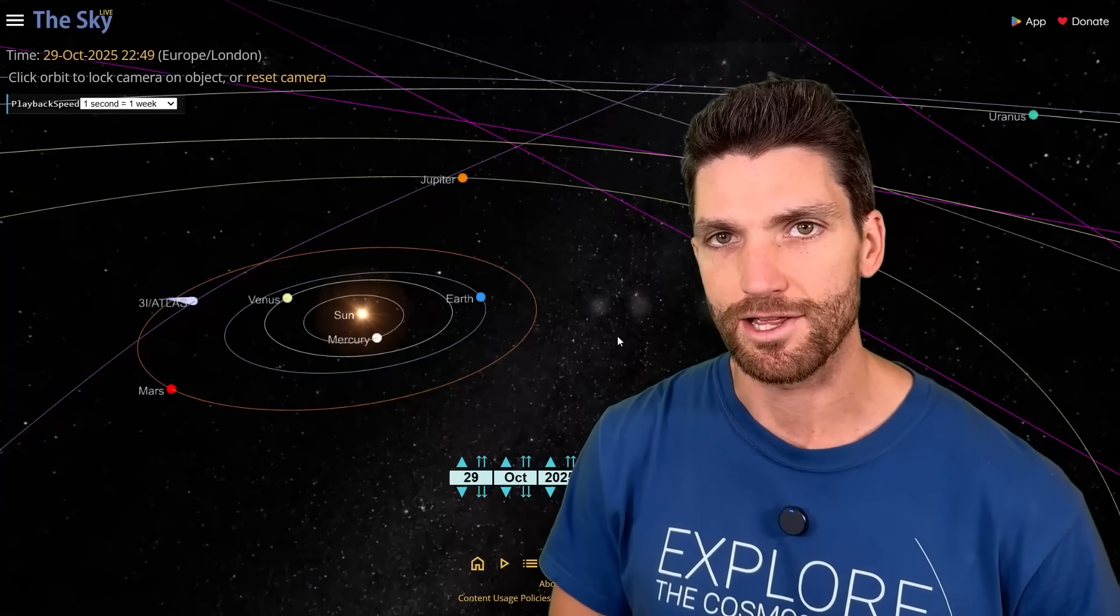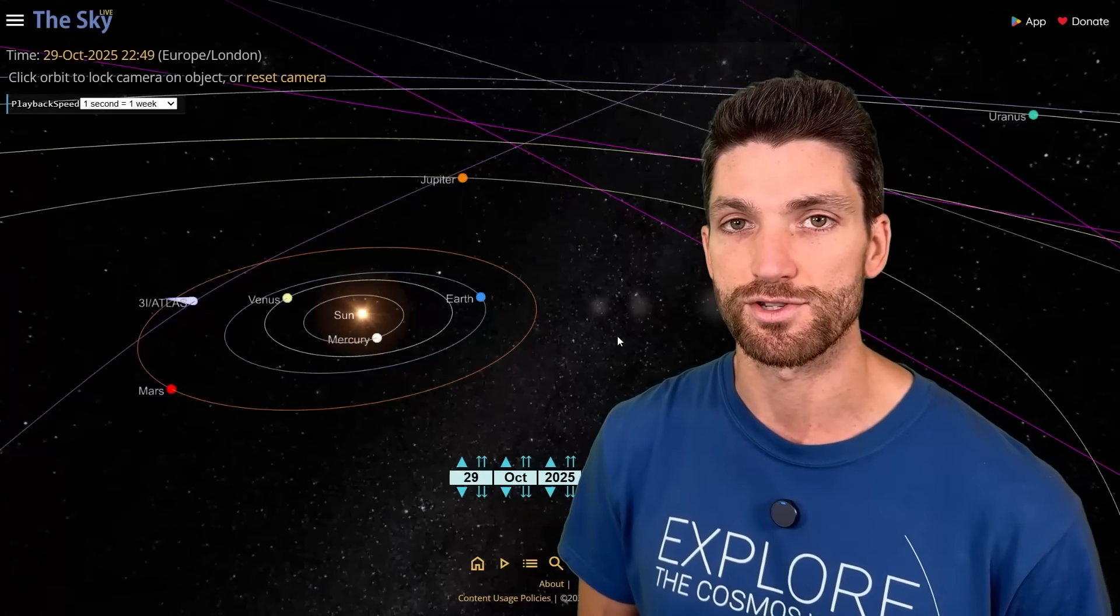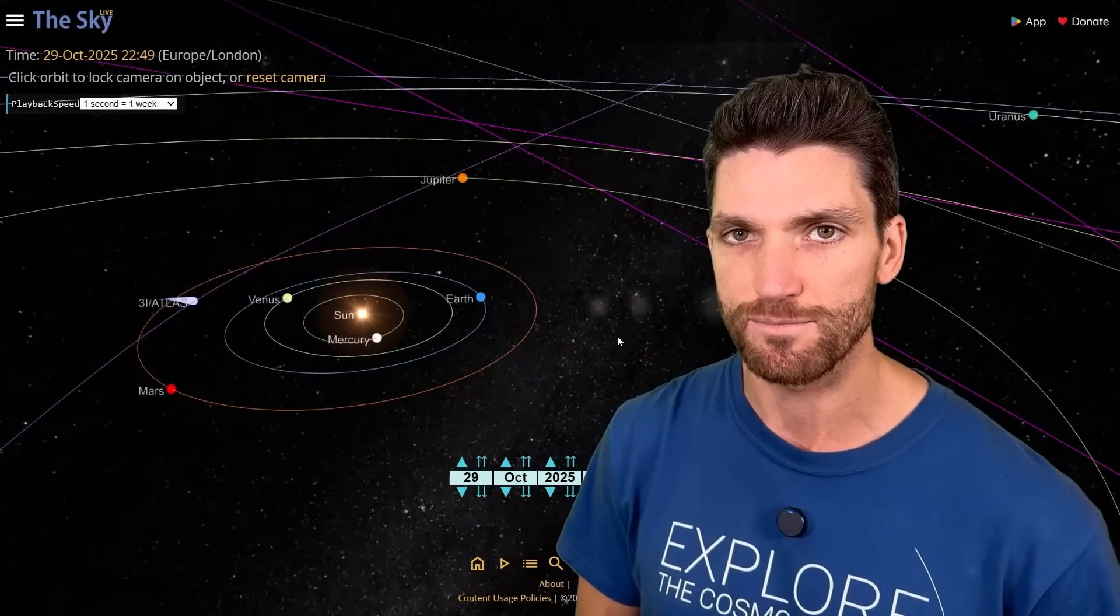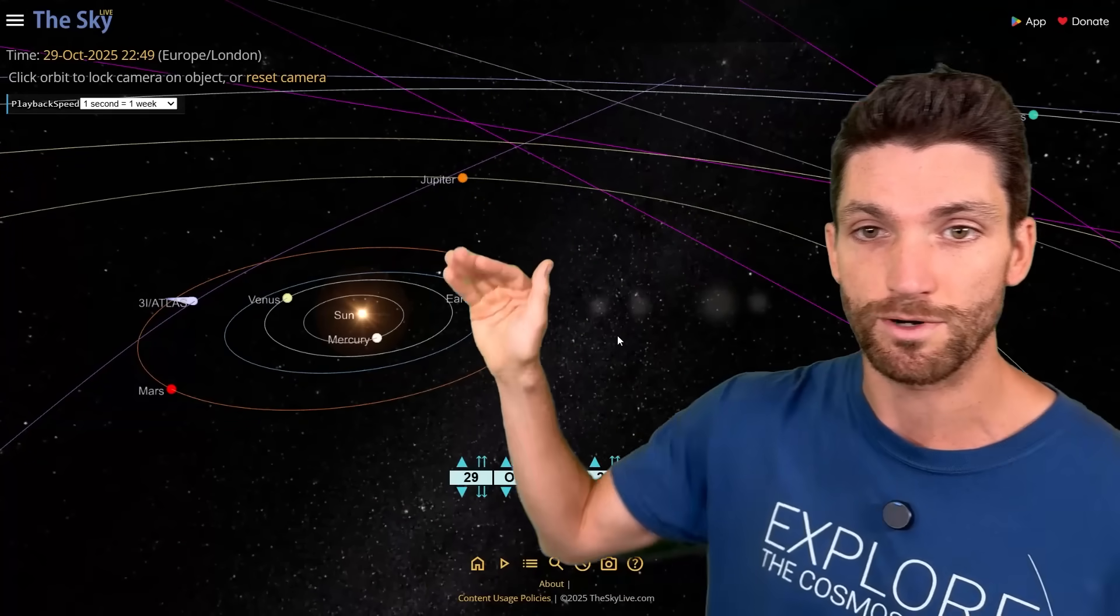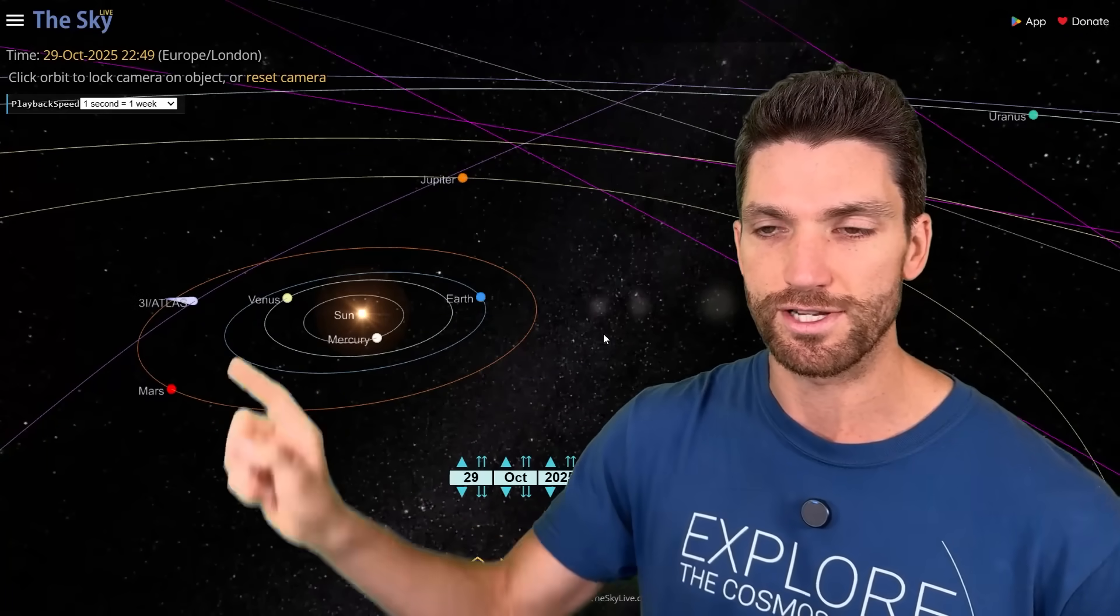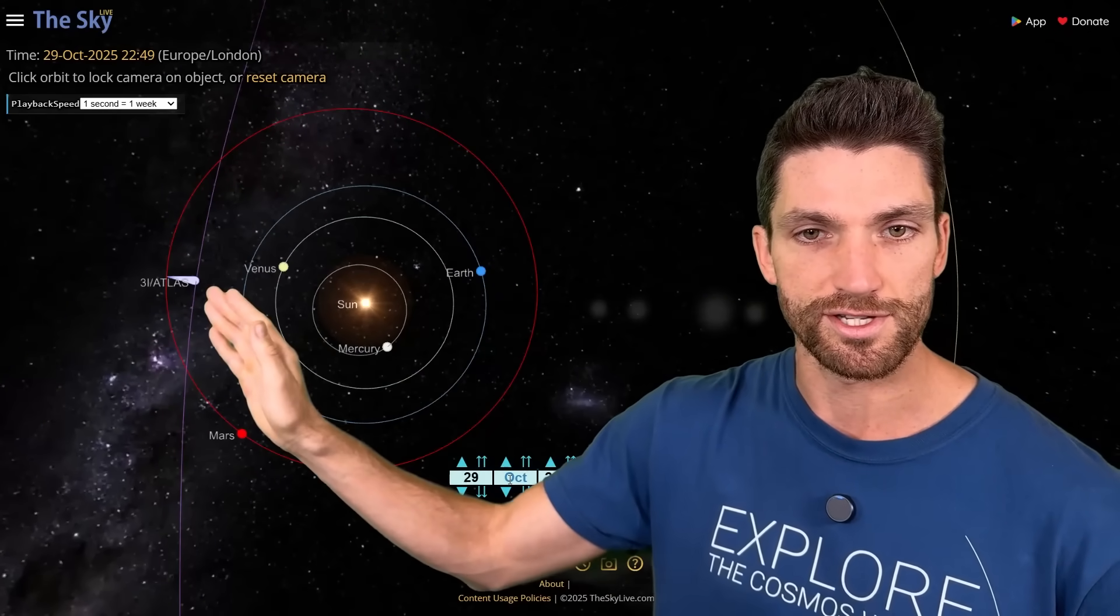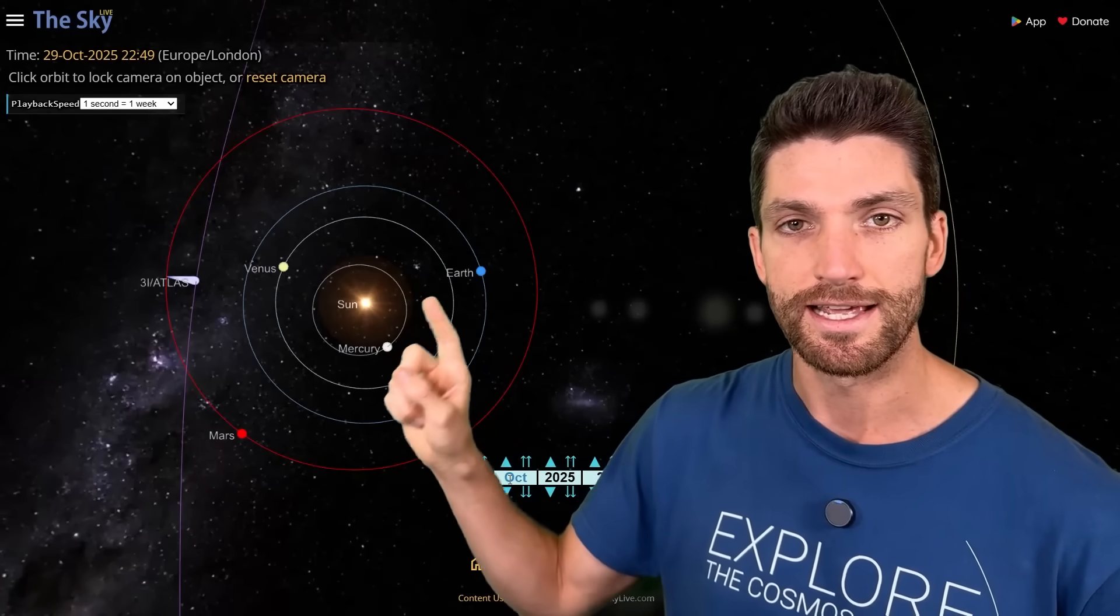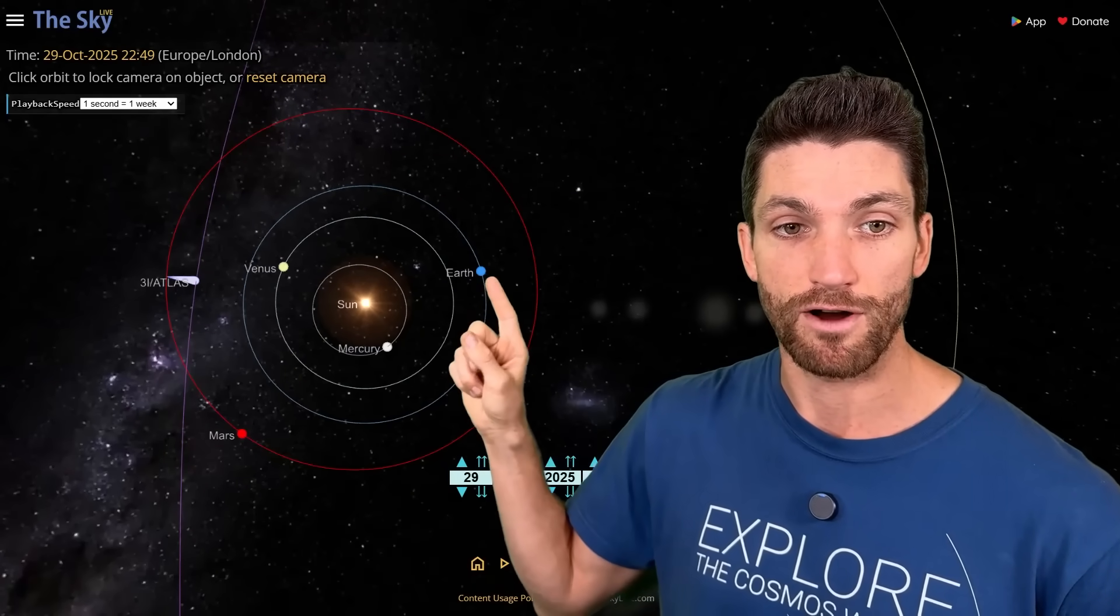We'll begin by looking at a 3D view of our solar system as provided by the SkyLive. This is linked in the video description if you want to play with this yourself. This is set for today, the 29th of October, the perihelion of interstellar object 3i Atlas. Here we see our inner solar system, and we also see out to Jupiter. There is our unusual interstellar visitor, and this is its perihelion. It is as close as approach to the sun, just about 1.36 astronomical units. The distance from the Earth to the sun is one astronomical unit. You can see that Earth and 3i Atlas are actually pretty far apart.